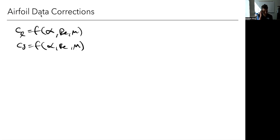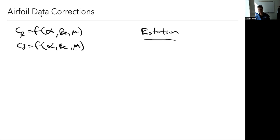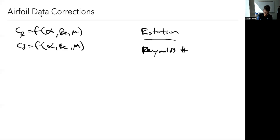There are a few reasons for that. The biggest and most important by far is rotation — the fact that this is a rotating blade as opposed to a stationary static airfoil case changes the lift and drag behavior. The others are Reynolds number and Mach number, and I'll briefly touch on those.